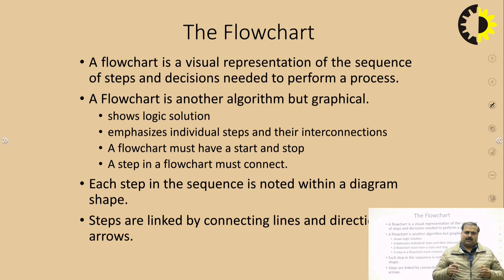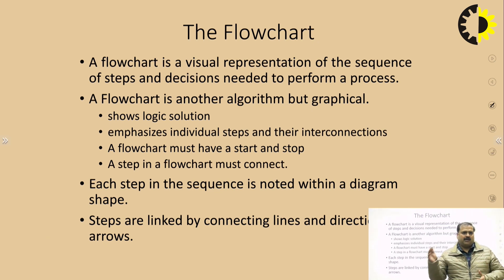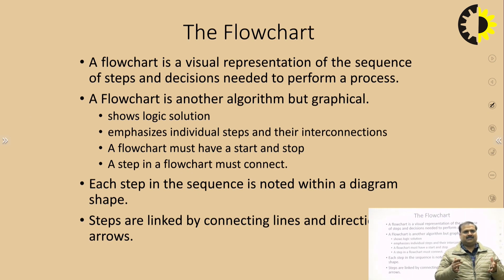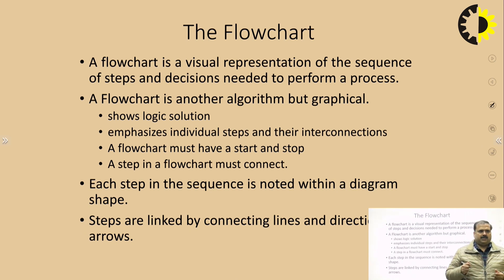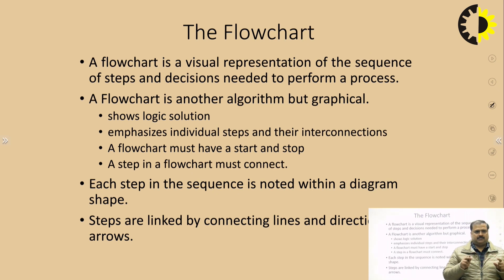A flowchart is a graphical version of an algorithm, or we can say it is a visual representation of the sequence of steps and decisions needed to perform a process — that process being the solution to a problem. In the flowchart, we create it using a certain set of graphical symbols.